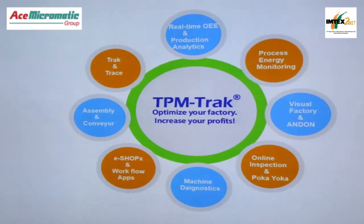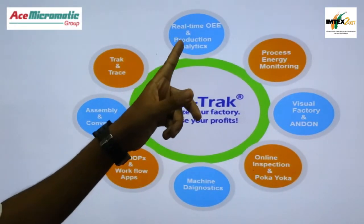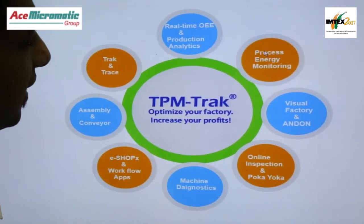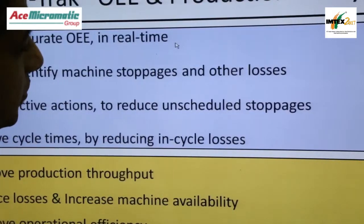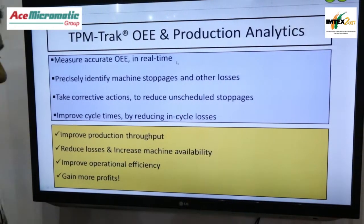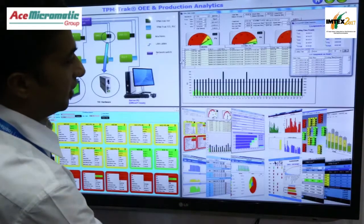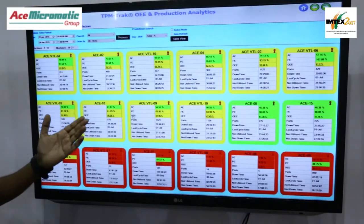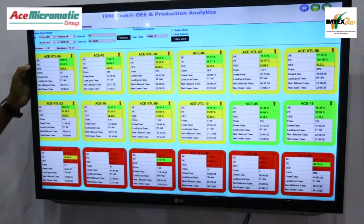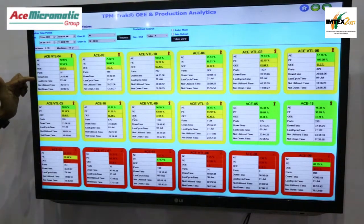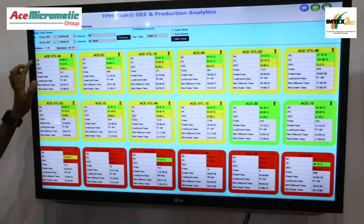The data collected from the hardware will be looked at in the software — the real-time OEE production analytics, that is TPMTRAC. So we will move on to the software part of it. Here we will analyze efficiency, availability, performance and OEE. Apart from the efficiencies, we can look at parts, down times, and cycle times. These data will be available as a shop-level view.